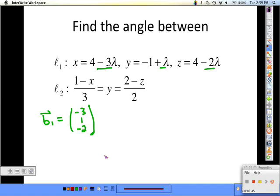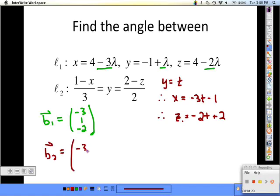To deal with the second one, we need to introduce a parameter and say that y is equal to t. So then (1 minus x) over 3 equals t, therefore x equals negative 3t minus 1. We also know that (2 minus z) over 2 equals t, therefore z is equal to negative 2t plus 2. So b2 is (-3, 1, -2).